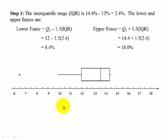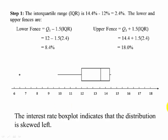And now we erase our fences, and we have our box plot. The interest rate box plot indicates that this distribution is skewed left, as it has a longer tail on the left.